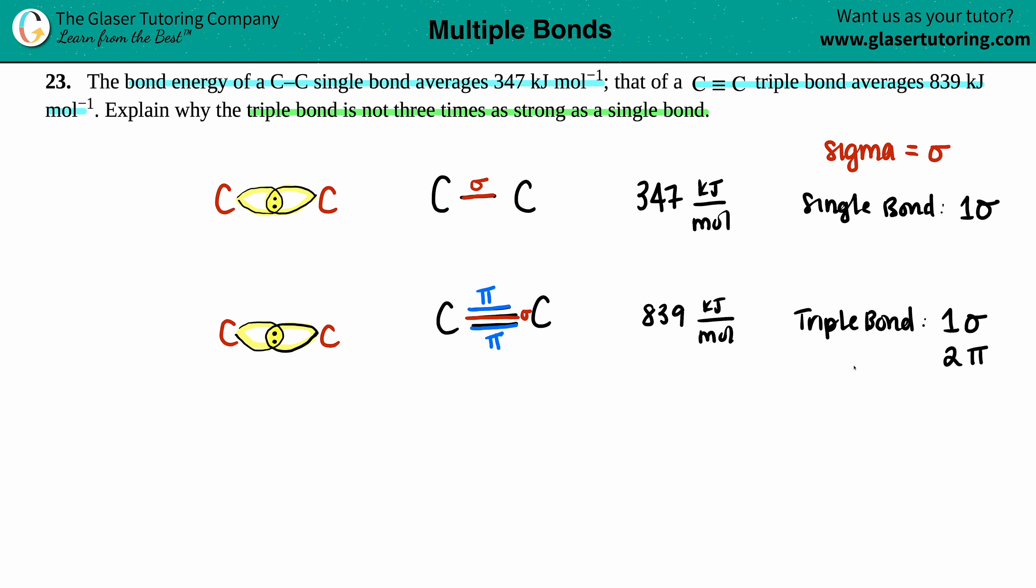So it would make sense if we had for the triple bond, three sigmas, then technically the number should be three times the amount, but we have two totally different bonds. And those are not from nucleus to nucleus. Those are on the top and bottom. These are represented with your pi orbitals or your P orbitals. Think of them as the dumbbells.